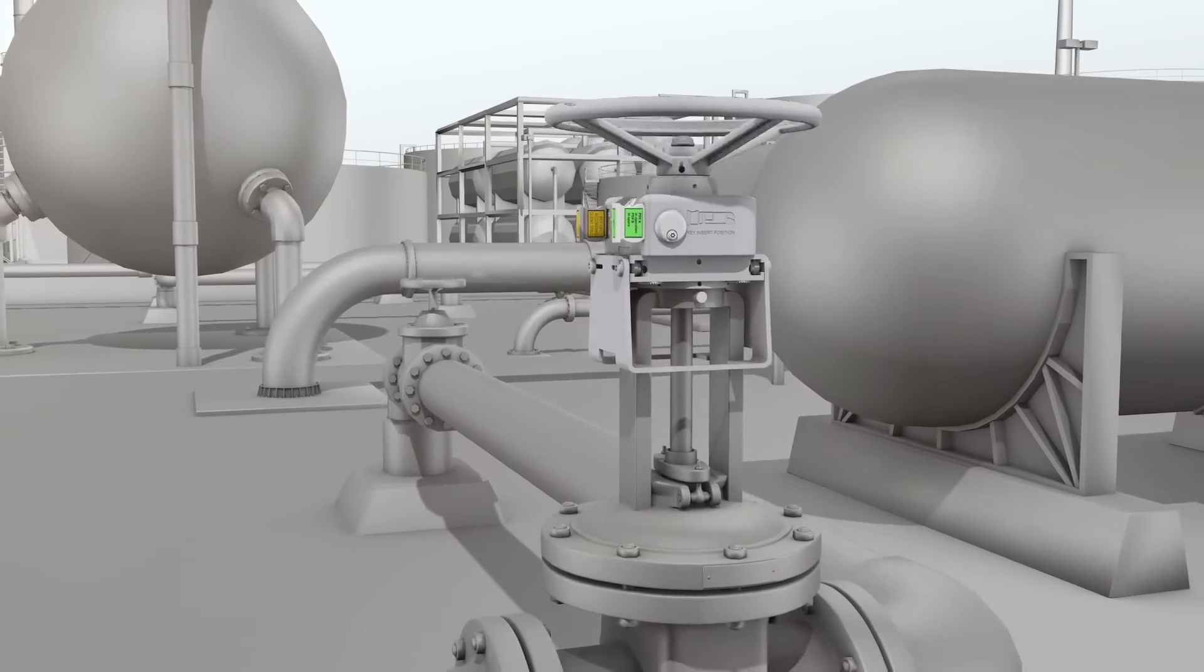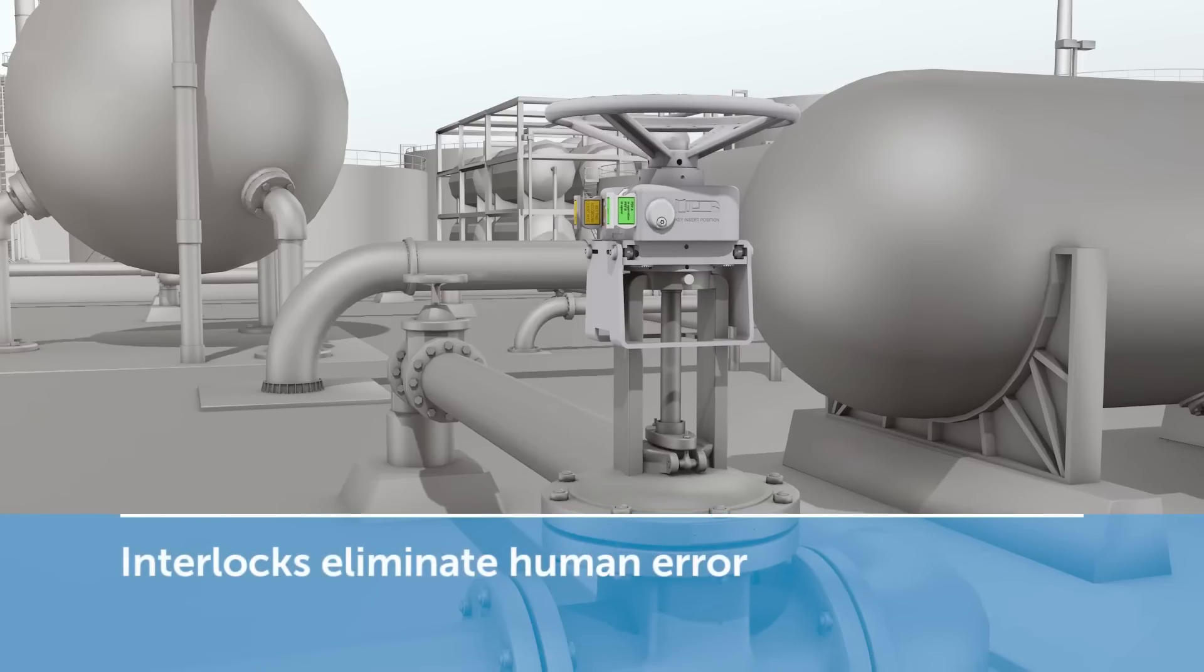Valve interlocks are permanently installed on a valve. They improve process safety by preventing incorrect valve operation.